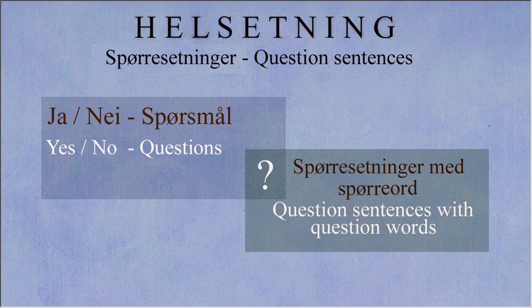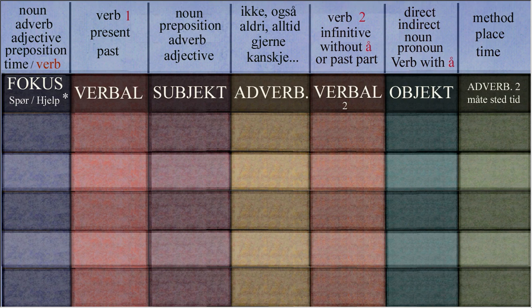Question sentences are divided into two types: yes/no, where you're asking somebody yes or no, and then question words, where you want something more specific — more information than just yes or no. Here is the normal sort of order, except here I've put question and helper words at the beginning. A lot of question sentences begin with verbs.